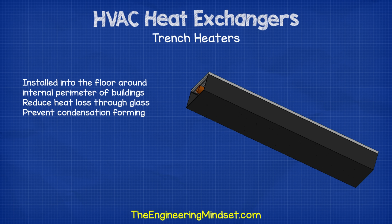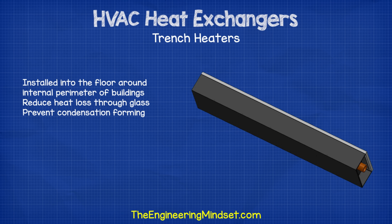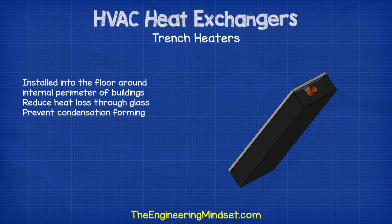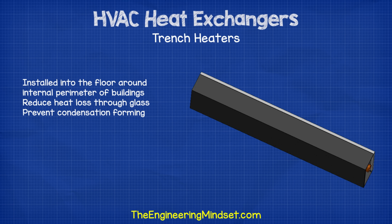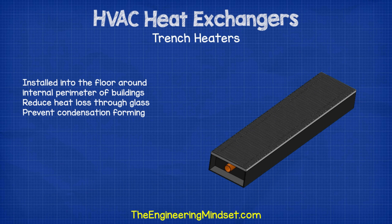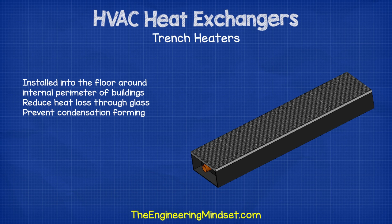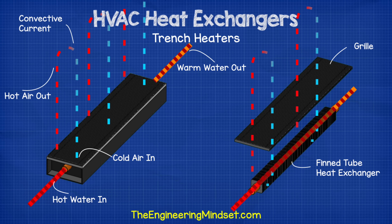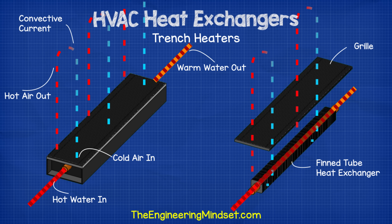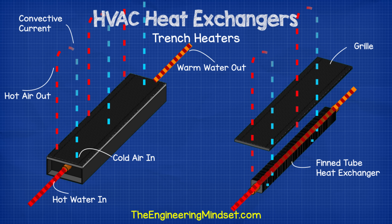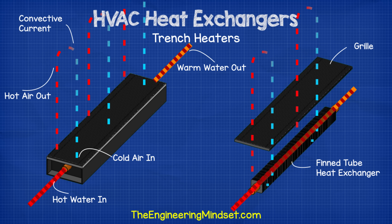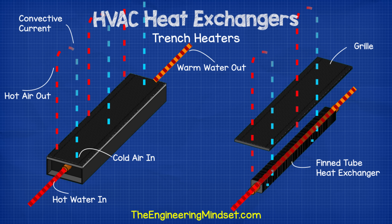Trench heaters are installed around the perimeter of a building, usually under a window or glass wall, and are very common in new commercial buildings. They are installed into the floor to reduce heat loss through the glass and prevent condensation forming by creating a wall of convecting air currents. Trench heaters use hot water or electric heating elements. Their position at floor level gives access to the coldest air in the room. The heat exchanger heats this cold air, causing it to rise, and cold air rushes in to replace it, creating a continuous convective current.